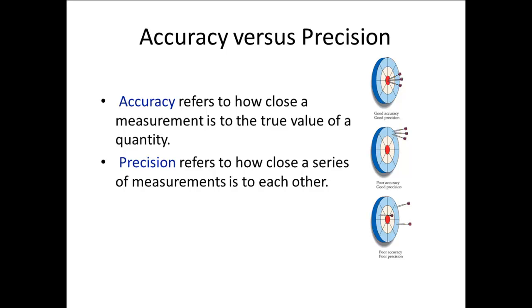Precision refers to how close a series of measurements is to each other. If we each used the third ruler to measure the line, our readings would probably be within 0.1 millimeters of each other. If we each used the first ruler, they would only be within 0.1 decimeters of each other. And using the third ruler, which gives more digits, our measurements would be closer together, and therefore more precise.